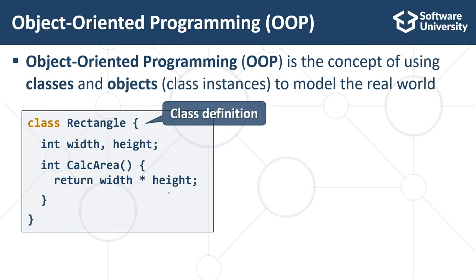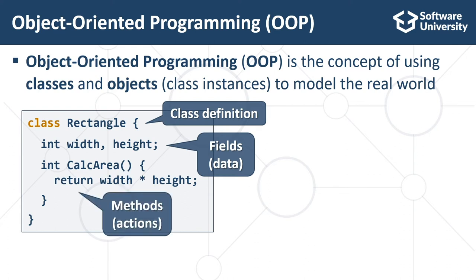This is the class definition, and the programming language here doesn't matter. These are the definitions of the data fields which the class holds in each object. There are also methods of the class, which are the operations or actions that objects of this class can do. We have several objects of this class Rectangle.